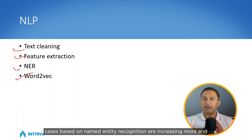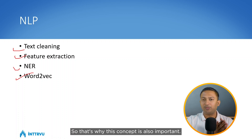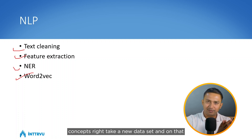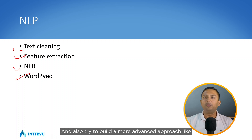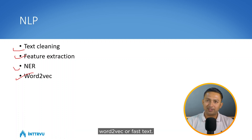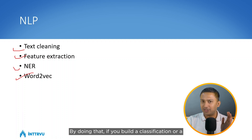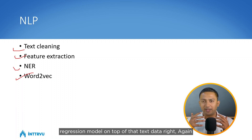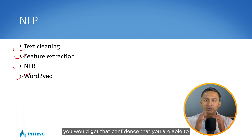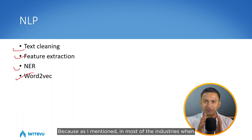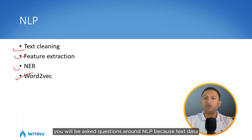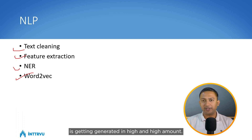Also learn named entity recognition, as use cases based on NER are increasing across industries. When going through NLP concepts, take a dataset and build both a traditional feature engineering approach like TF-IDF and a more advanced approach like Word2Vec or FastText, then build a classification or regression model on top of that text data. This is important because in most industries, during interviews, you will be asked questions around NLP since text data is being generated in high volumes.